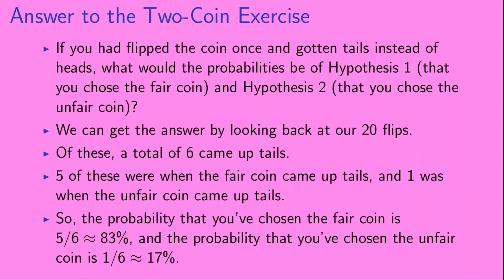Before we go, I promised the answer to the two-coin exercise posed in the video. If you had flipped the coin once and gotten tails instead of heads, what would the probabilities be of hypothesis 1 — that you chose the fair coin — and hypothesis 2 — that you chose the unfair coin? Looking back at our 20 flips, a total of six came up tails: five when the fair coin came up tails, and one when the unfair coin came up tails. So the probability that you've chosen the fair coin is five-sixths, or about 83%, and the probability that you've chosen the unfair coin is one-sixth, or about 17%.